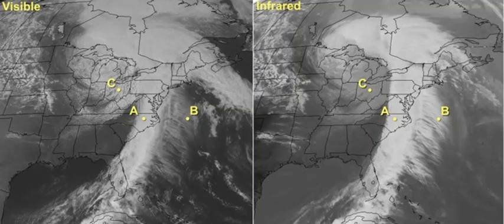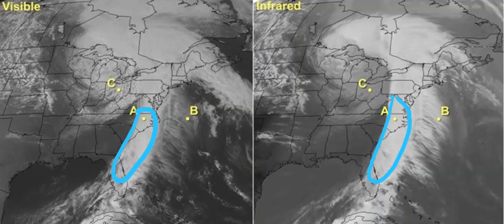Let's start by looking at point A, which is located in the line of bright white clouds extending from the Outer Banks, North Carolina, down into Florida. Their brightness on visible imagery indicates that these are thick clouds. These clouds also appear bright on infrared imagery, so they have cold tops, indicating that the tops are high in the troposphere. Given that these clouds are thick and have cold tops, we can assume that they are cumulonimbus, which can have tops reaching altitudes upwards of 60,000 feet.